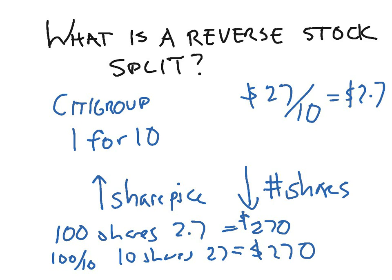They just reduced the number of shares to increase the stock price to maybe make it look more attractive for investors. But for you, as an investor in the stock, it really doesn't make any difference — unless it attracts more investors, which you'd hope would raise the price. But in Citigroup's case, it really hasn't done that. That's my explanation. Thanks for watching. I'm Spencer Liu, the Finance Guy.